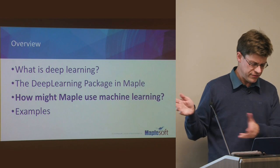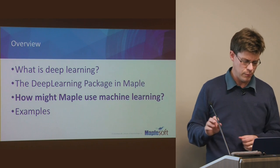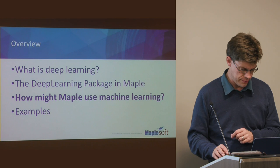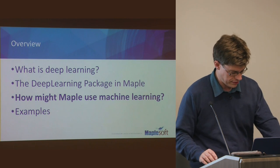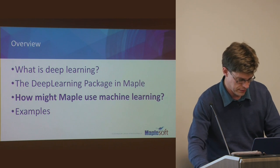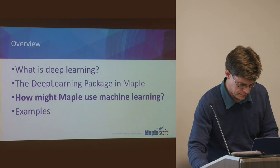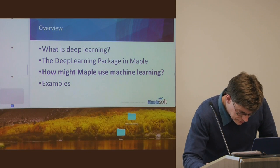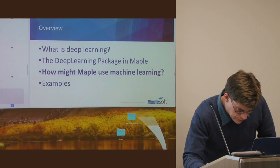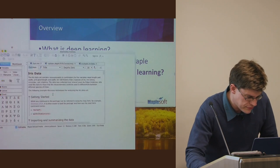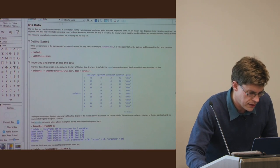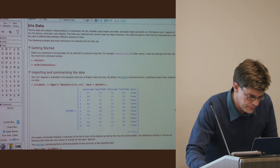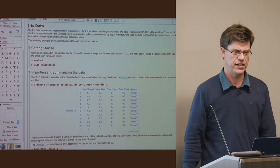That's all about the deep learning package in Maple — we will see it live shortly. What I'm first going to show is a simple example: the so-called iris dataset. This originates from an old paper from the 1930s where somebody measured a whole bunch of quantities of different iris flowers: petal length, sepal length, petal width, et cetera.